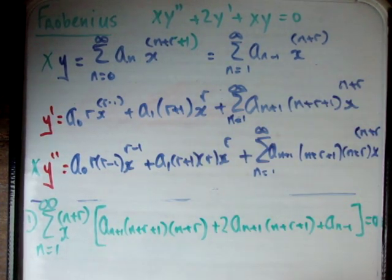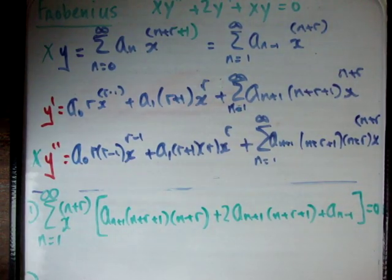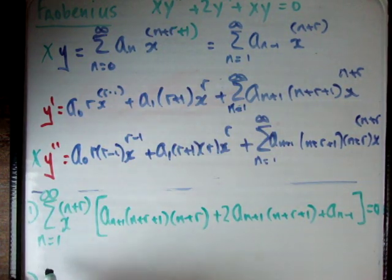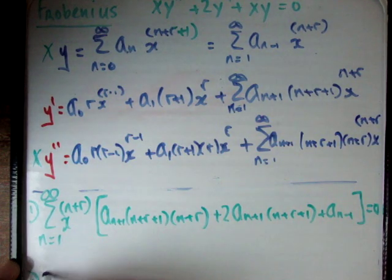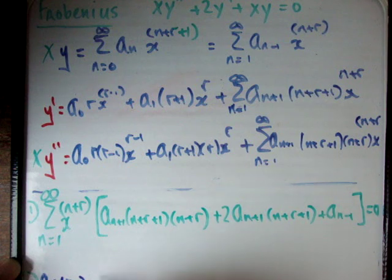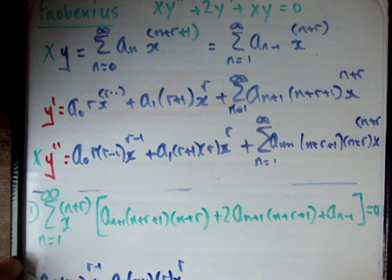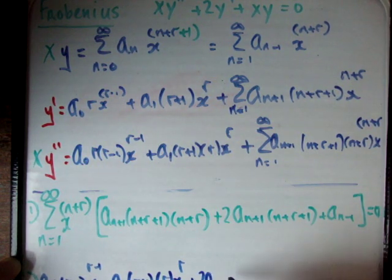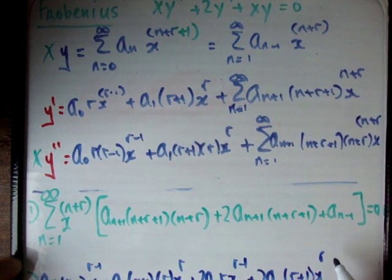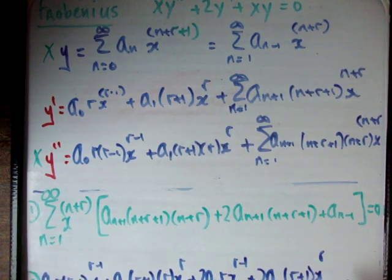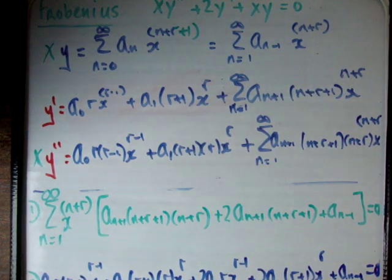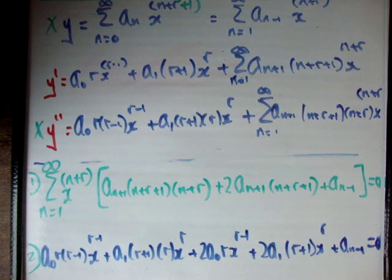Equation 2, the indicial equation, collects all the isolated non-series terms: a_0·r·(r−1)·x^(r−1) + a_1·(r+1)·r·x^r + 2·a_0·r·x^(r−1) + 2·a_1·(r+1)·x^r = 0. I know that looks painful, but when you're doing it on a sheet of paper it's not too bad. I'm going to pause there and continue the rest in part 2.